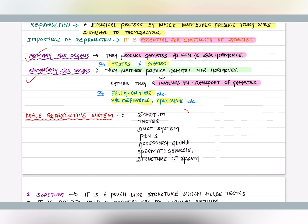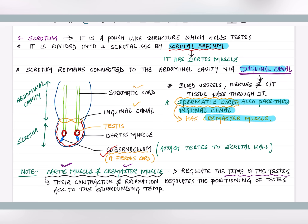Let's start with the male reproductive system. The first part is the scrotum. Scrotum is a pouch-like structure that holds the testis. There are two testes, so scrotum has two scrotal sacs. Each scrotal sac has one testis. The scrotum is divided into two parts by a scrotal septum. The scrotum has muscles known as dartos muscle. Initially, testes are present in the abdomen during embryonic development, and later they descend into the scrotum.